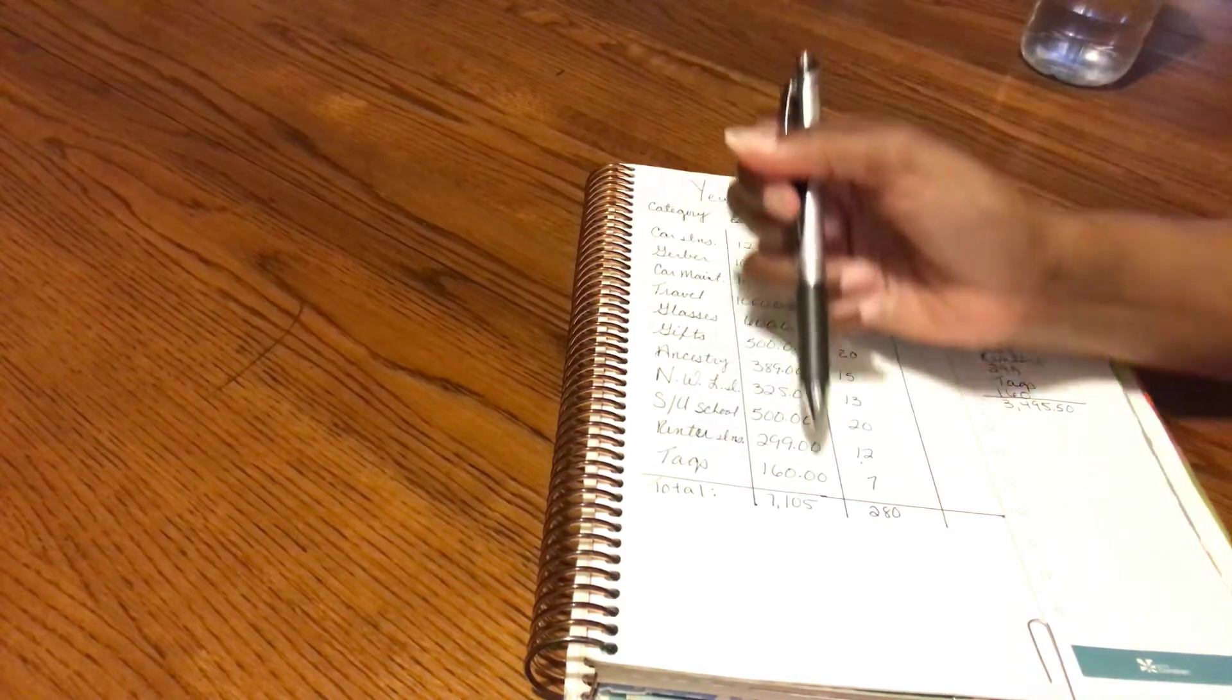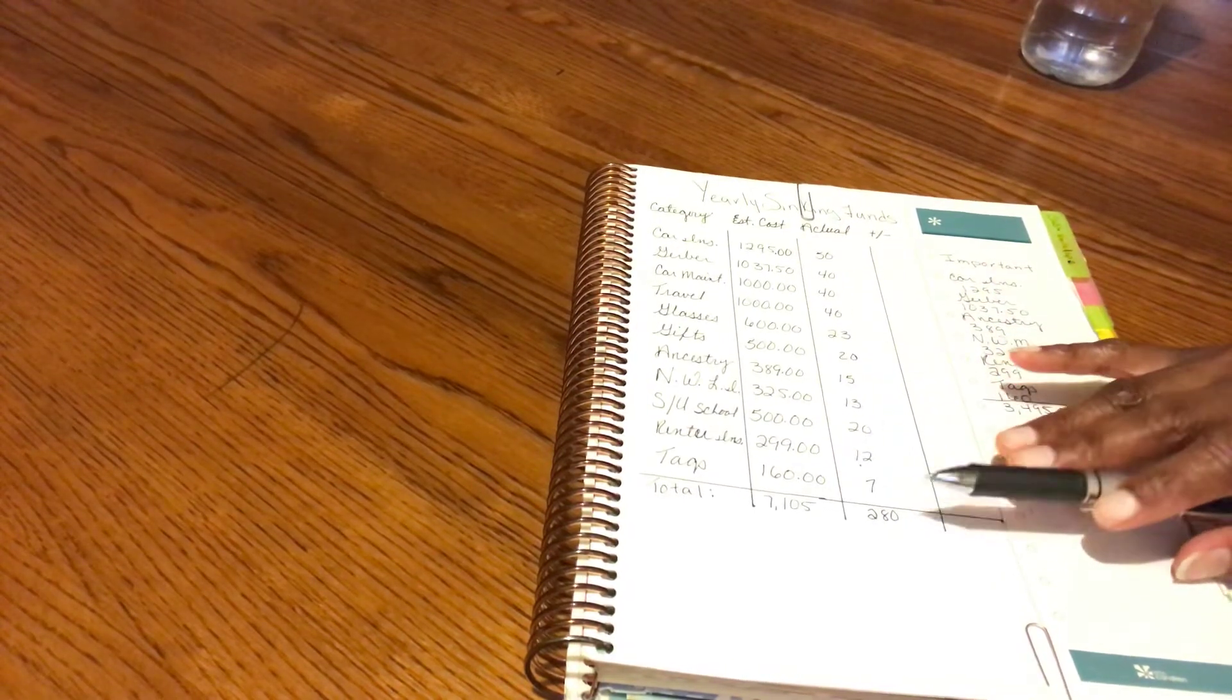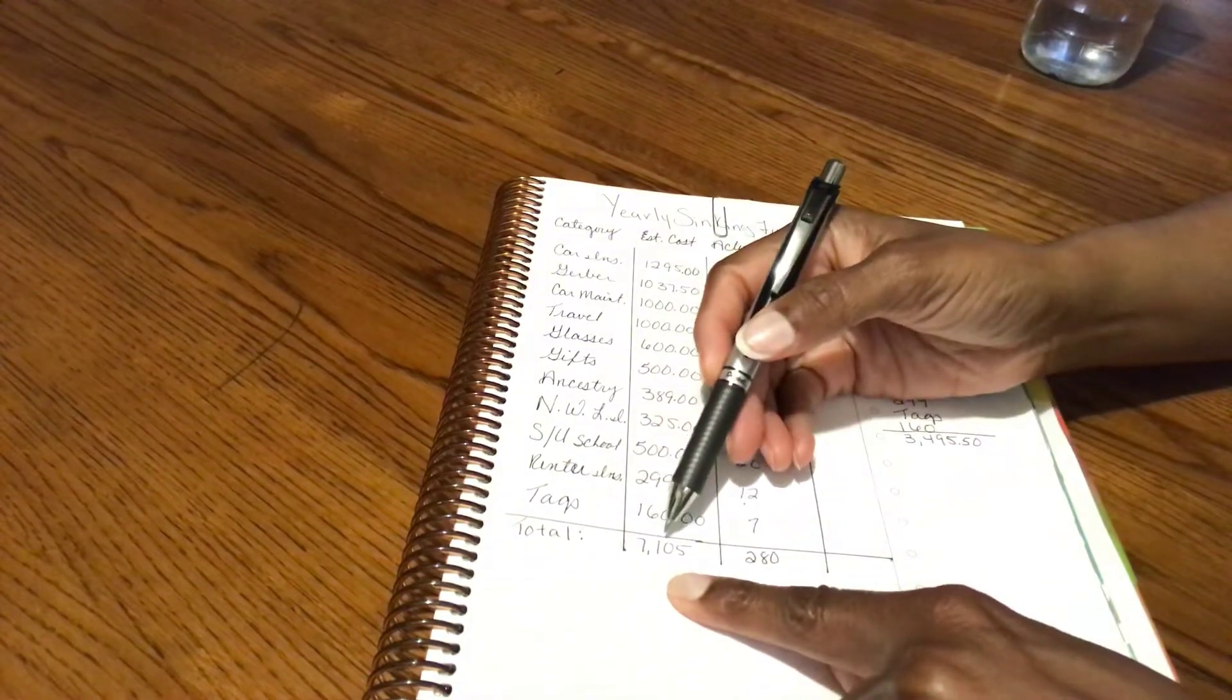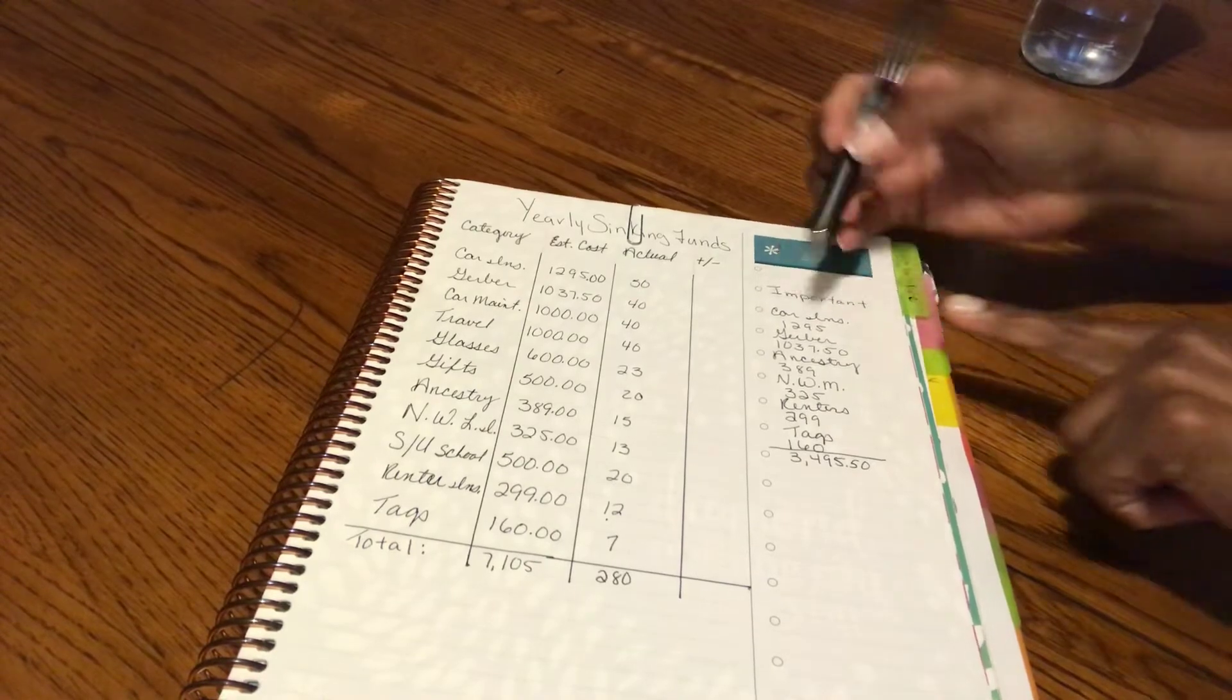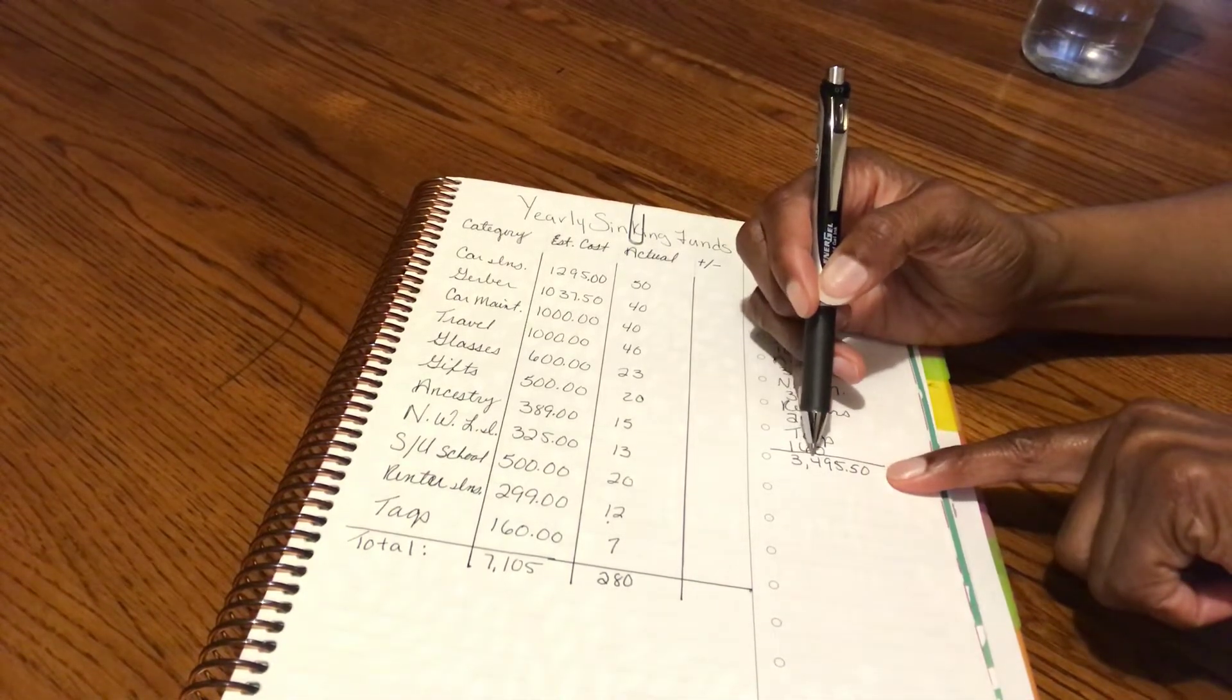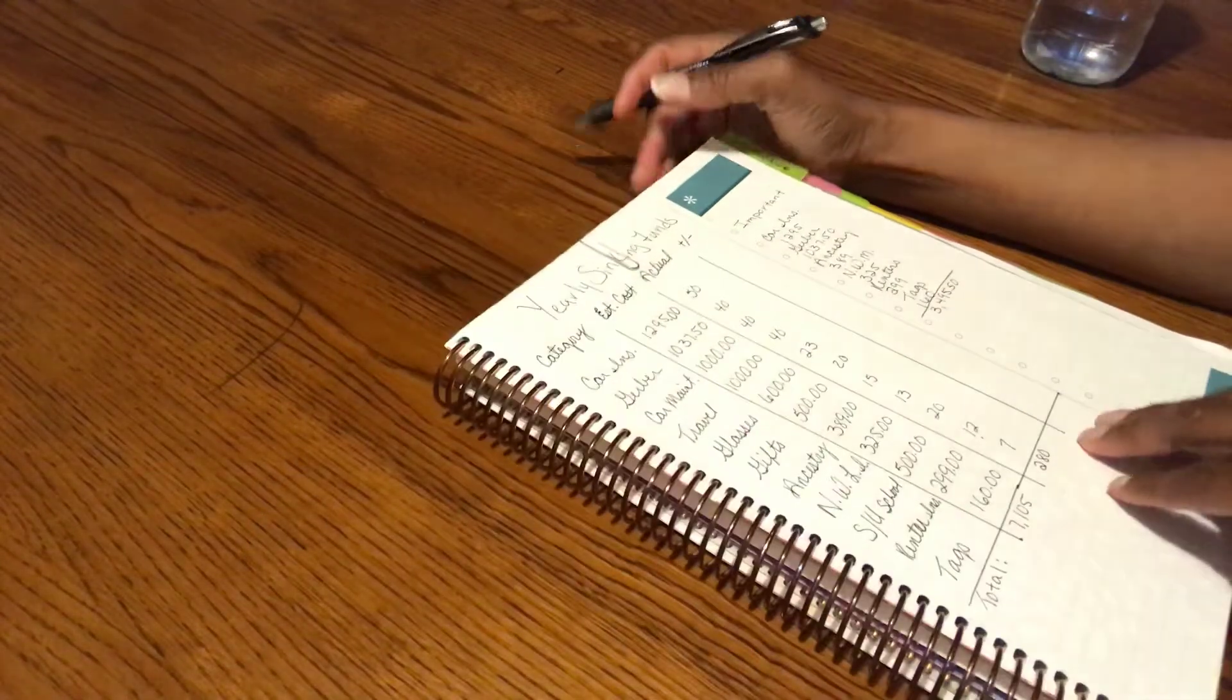The total of these is $7,105, and the total per pay period that I would be saving is $280. The most important ones would be the car insurance, Gerber, Ancestry, Northwest Mutual, renters, and tax, which would be $3,495.